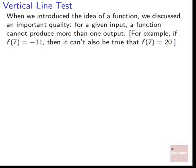When we introduced the idea of a function, we discussed an important quality: for a given input, a function cannot produce more than one output. If f of some input equals −11, then it can't also be true that f of that same input equals 20. When you put something into a function, it always puts out the same output — we can trust our function, our transformation, our machine to always give us the same output if we put in the same input. We can turn this idea into something we can see in graphs. We call this the vertical line test.